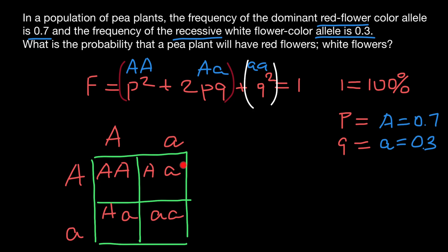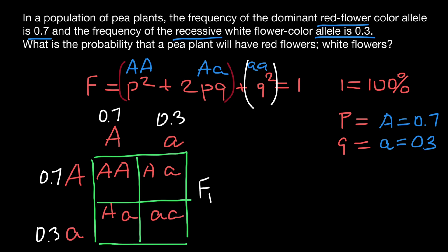What are the frequencies of these genotypes? Not one quarter each — no. We know the frequency of the dominant allele A is 0.7 and the frequency of the recessive allele a is 0.3, so we place 0.7 and 0.3 in the Punnett square. The probability of the homozygous dominant genotype in the F1 generation is 0.7 times 0.7, which equals 0.49.